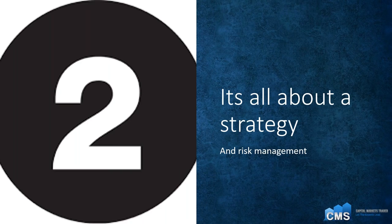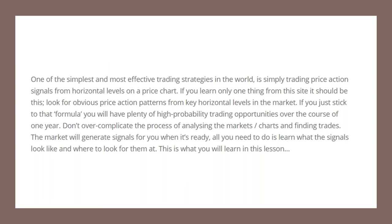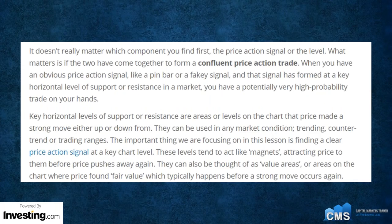Remember, it's all about the strategy. One of the simplest and most effective trading strategies in the world is simply trading price action signals from horizontal levels on a price chart. If you learn only one thing, it should be this: look for obvious price action patterns from key horizontal levels in the market. If you just stick to that formula, you'll have plenty of high-probability trading opportunities over the course of one year. Don't overcomplicate the process — the market will generate signals for you when it's ready. All you need to do is learn what the signals look like and where to look for them.